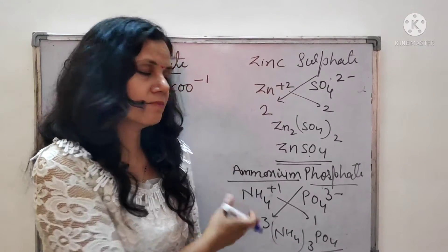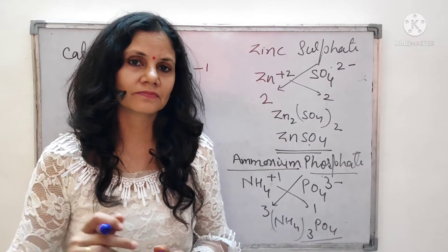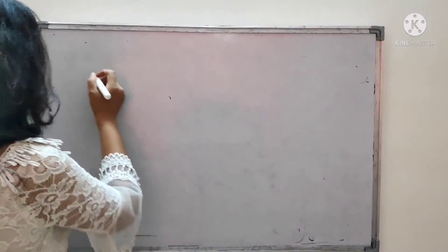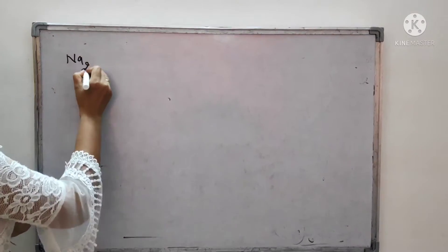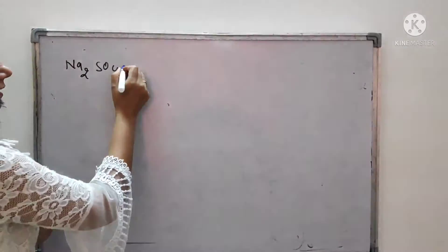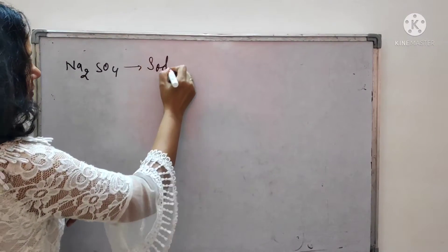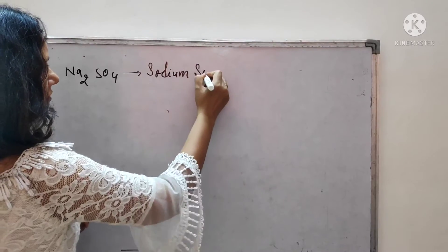So in this way, if you are given a name and need to write a formula, you can use this trick. Now, if the reverse is given — a formula and you need to write the name — the same process applies. For example, Na2SO4: Na is sodium, SO4 is sulfate, so the name is sodium sulfate.